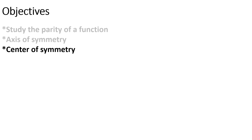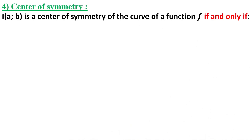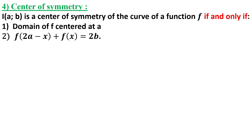Objective 3: center of symmetry. The second element of symmetry we studied last year is the center of symmetry. Let's recall its conditions. Consider the point I with coordinates (a, b). To prove that I is a center of symmetry of the curve of f, we need to prove that the domain of f is centered at a, which is the abscissa of this point.